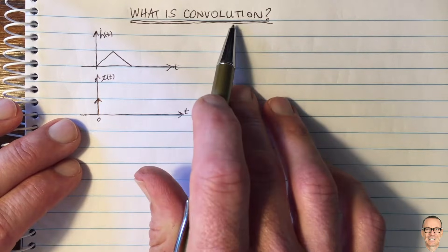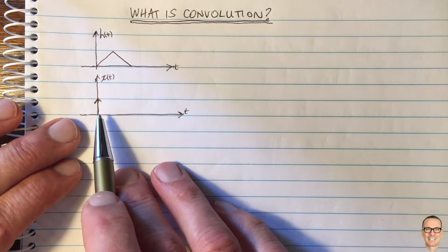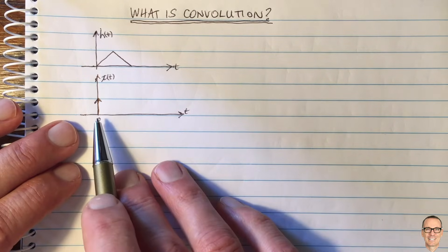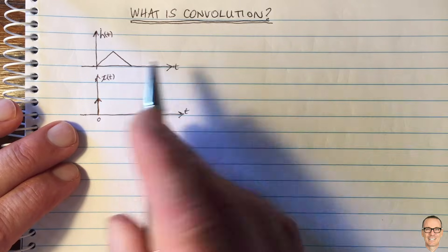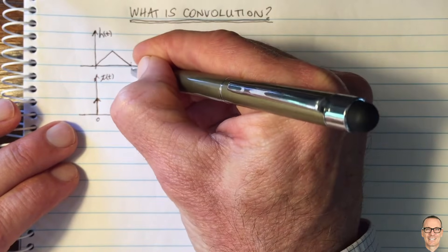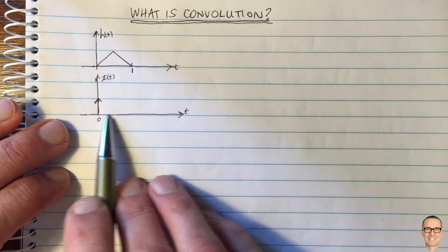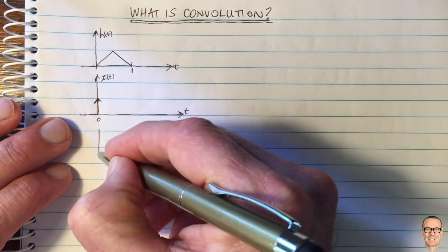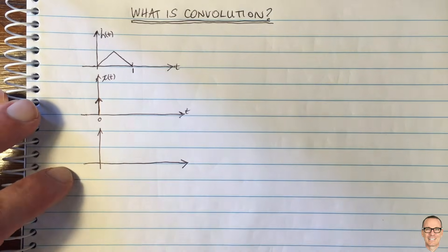So what is convolution? Fundamentally it's an operation that takes two functions or two signals and produces a third one, and it does it in a particular way. So let's look into it here. Let's take these two signals: here's a signal which is zero before time equals zero and then ramps up and then dies down — let's call that time one — and here's another which is zero for all time except a spike at time equals zero. We're going to see what the output is from a convolution of these two signals.